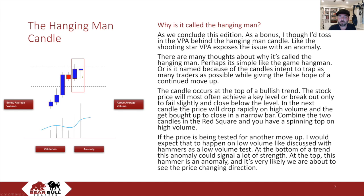In the next candle, the price will drop rapidly on high volume and then get bought up to close in a narrow bar. Combine these two together and you basically have a spinning top on high volume. If the price is being tested for another move up, I would expect this to happen on low volume, like discussed with the hammers as a low volume test. At the bottom of a trend, this anomaly could signal a lot of strength, but at the top, this hammer is an anomaly and it's very likely we are about to see the price changing direction.